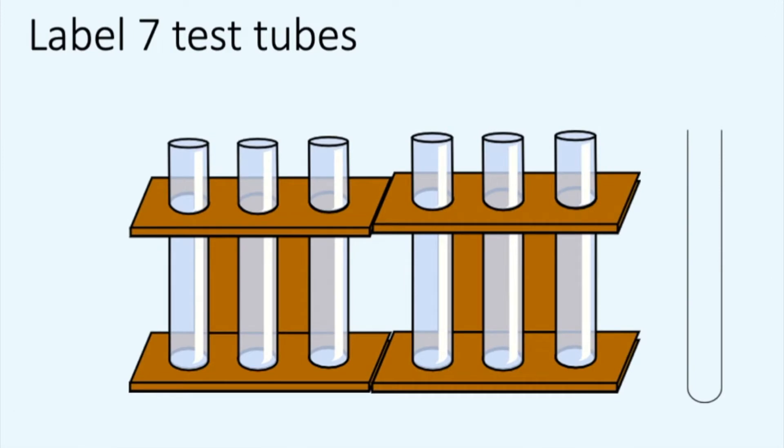Label the seven test tubes 1.0, 0.8, 0.4, 0.2, 0.1, 0.0, and then another test tube X for your unknown concentration.